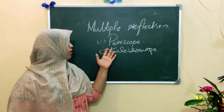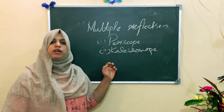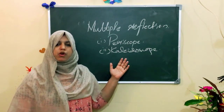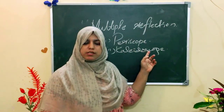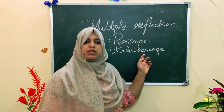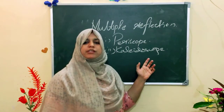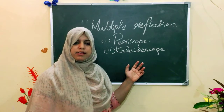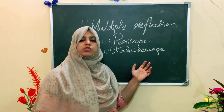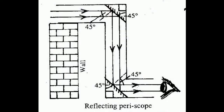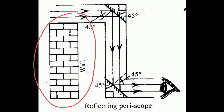First of all, what is a periscope and how is it constructed? In a periscope, two plane mirrors of the same size are used. Reflection from the two mirrors enables us to see objects which are not directly visible. Periscopes are used in submarines, tanks, and by soldiers in bunkers to see things outside. Here two plane mirrors are inclined at 45 degrees to each other, and the observer looks outside the wall.